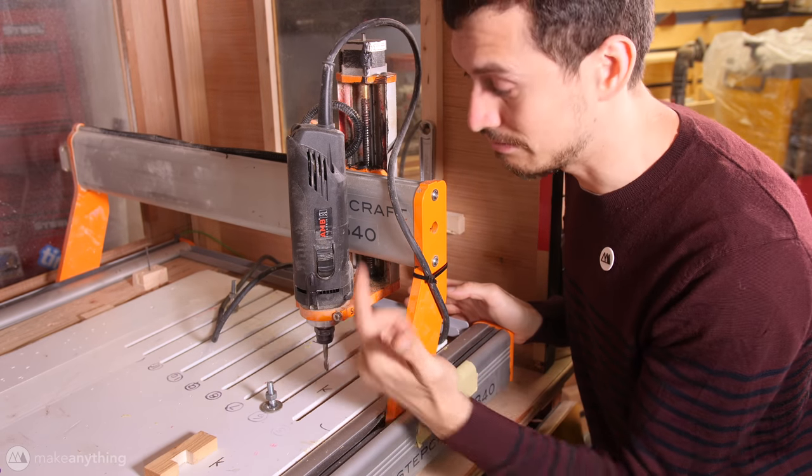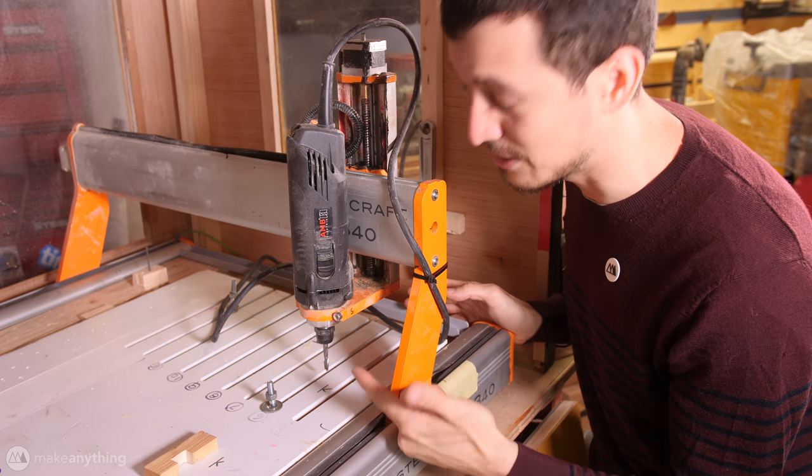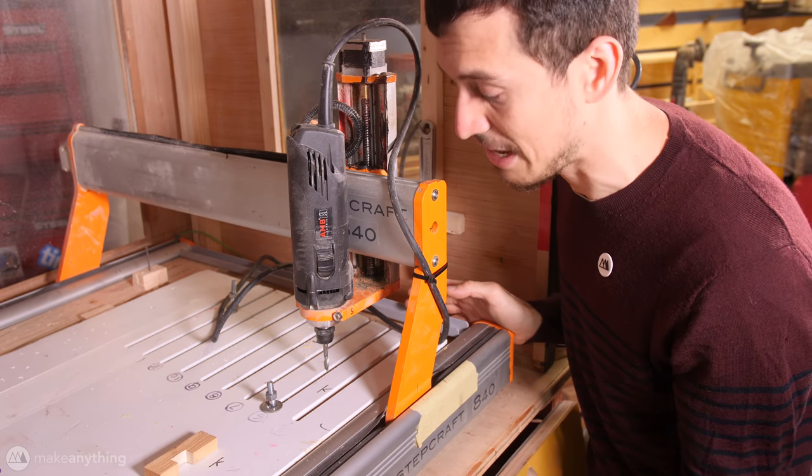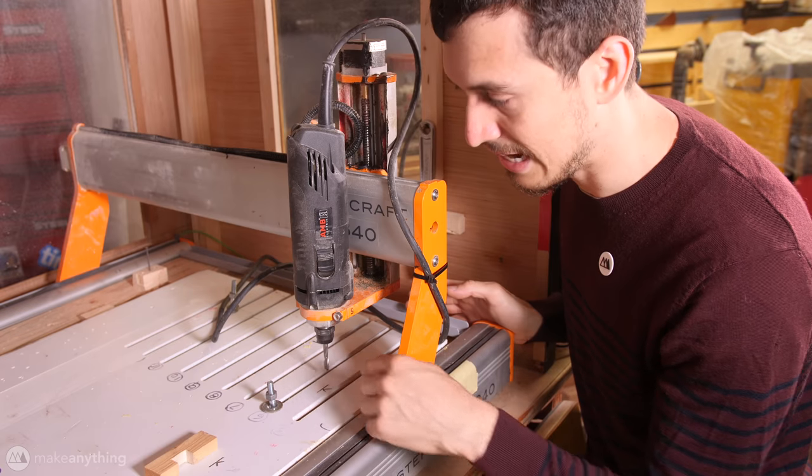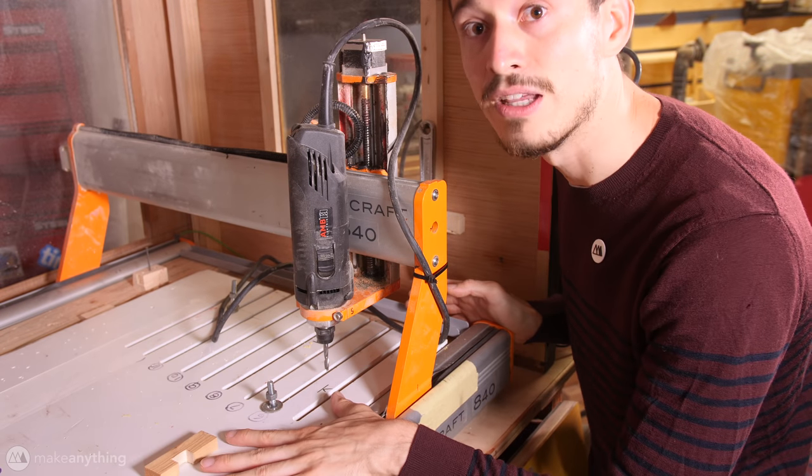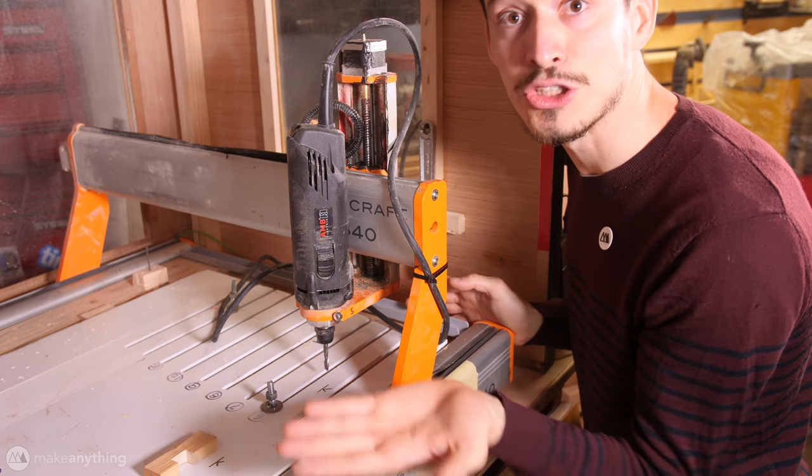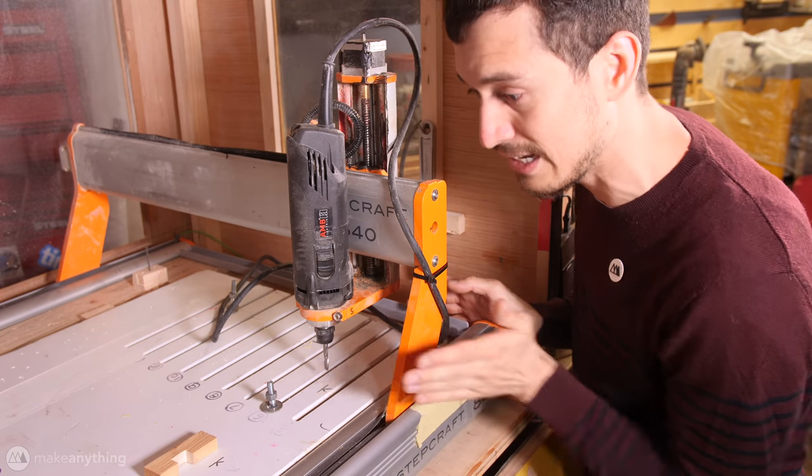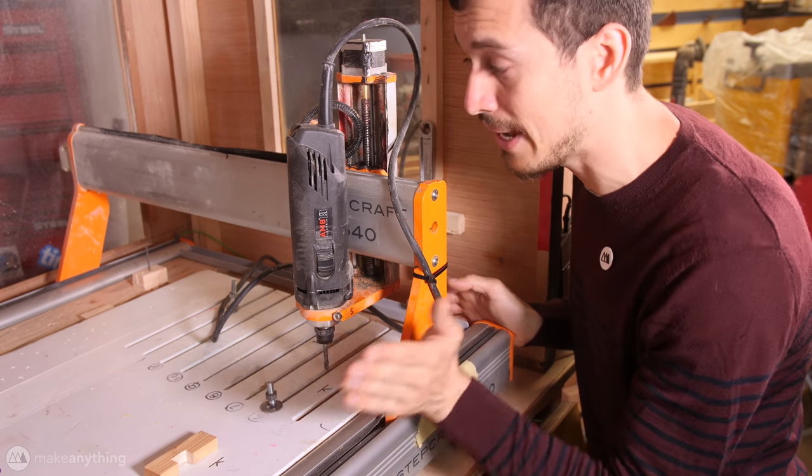Basically it's a giant Dremel. Super powerful motor that spins really fast. Tens of thousands of RPMs. And that carves away at whatever material you put on this bed. This thing is controlled by G-code, just like a 3D printer. So we've got this rig. This whole carriage moves forward and back, left and right. And there's also some up and down room here.